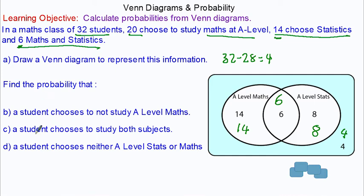Find the probability that a student chooses to not study A-level maths. This region is for maths, so there must be 12 people who do not choose A-level maths, which is the eight and the four. So that is 12 over 32, and simplify that fraction, divide both by four, and we have three-eighths.